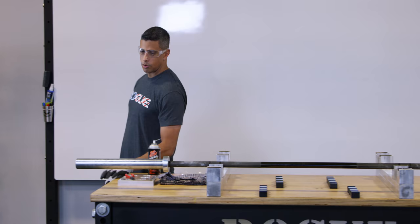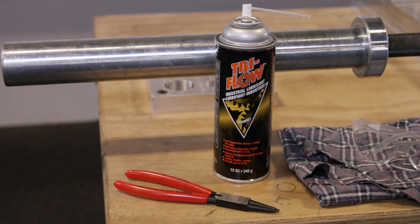Over time, dirt and chalk can get into the sleeve of your barbell, which can slow down the spin, so it's important to regularly clean your barbell in order to maintain optimum performance.